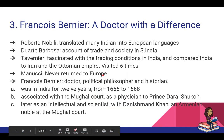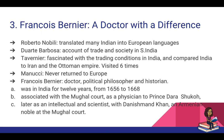The third traveler is Francois Bernier — a Frenchman and a doctor. He was one of many European travelers who came to India around the 10th to 17th centuries, preceded by others including Roberto Nobili, a Jesuit who translated many Indian texts into European languages; Duarte Barbosa, a Portuguese who left a detailed account of trade and society in southern India; Tavernier, who was fascinated with trading conditions and compared India to Iran and the Ottoman Empire, visiting six times; and Manucci, an Italian so enamored with India that he never returned to Europe and settled there.